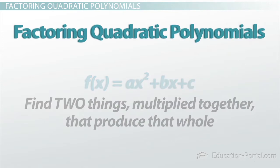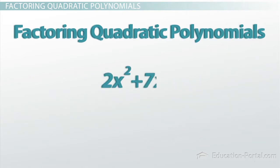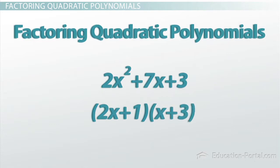So for example, 2x squared plus 7x plus 3 can be written as 2x plus 1 times x plus 3. We have factored 2x squared plus 7x plus 3 into two things that can be multiplied together, specifically 2x plus 1 and x plus 3.